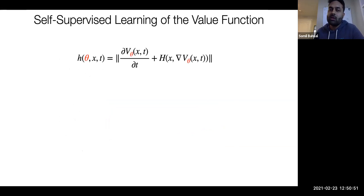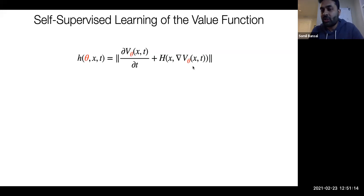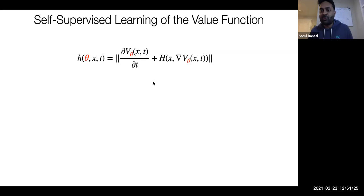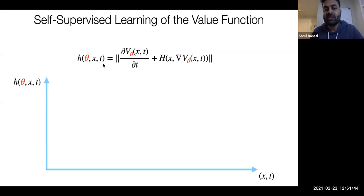DeepReach proposes a self-supervised learning method for learning the value function. For the backward reachable set, assume I only have a PDE to solve — if my value function is correct, the PDE should be zero everywhere for each state and time. I use this property as my learning signal: I sample state and time, then ask my neural network to minimize the left-hand side of the PDE. By the time the neural network makes it all zero, I know I have learned the correct value function — without requiring explicit supervision of the true value function.